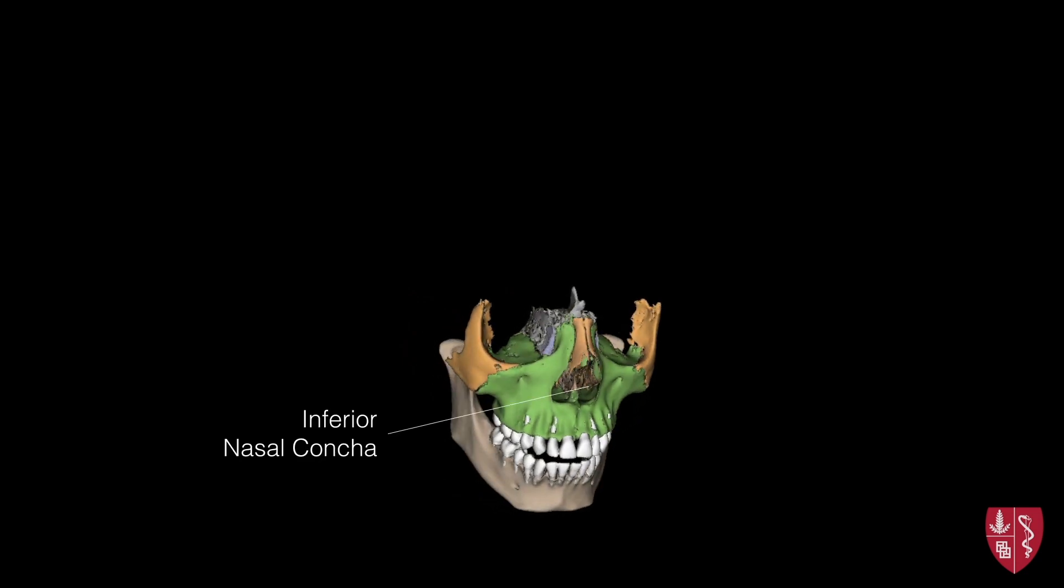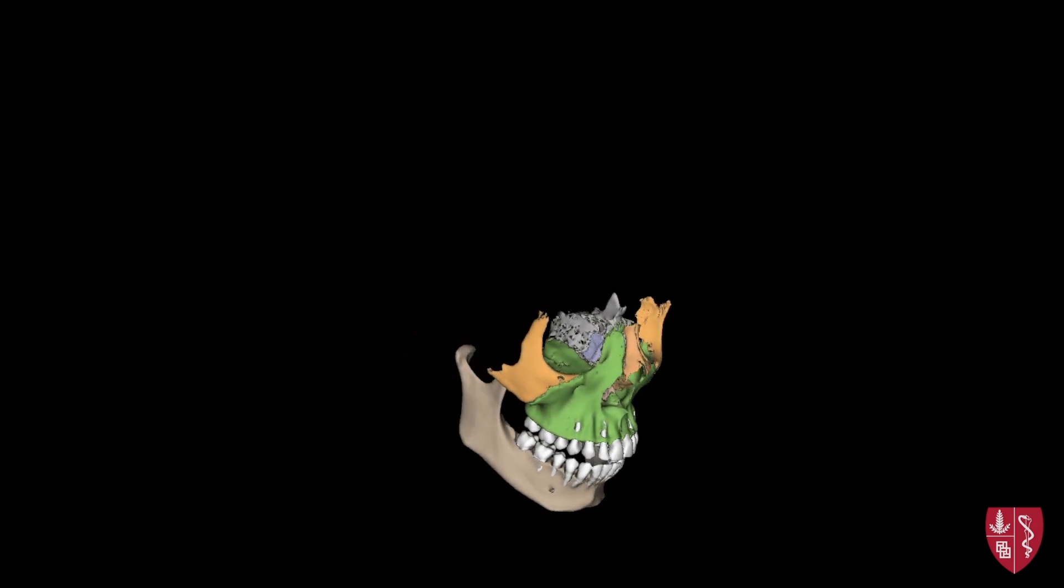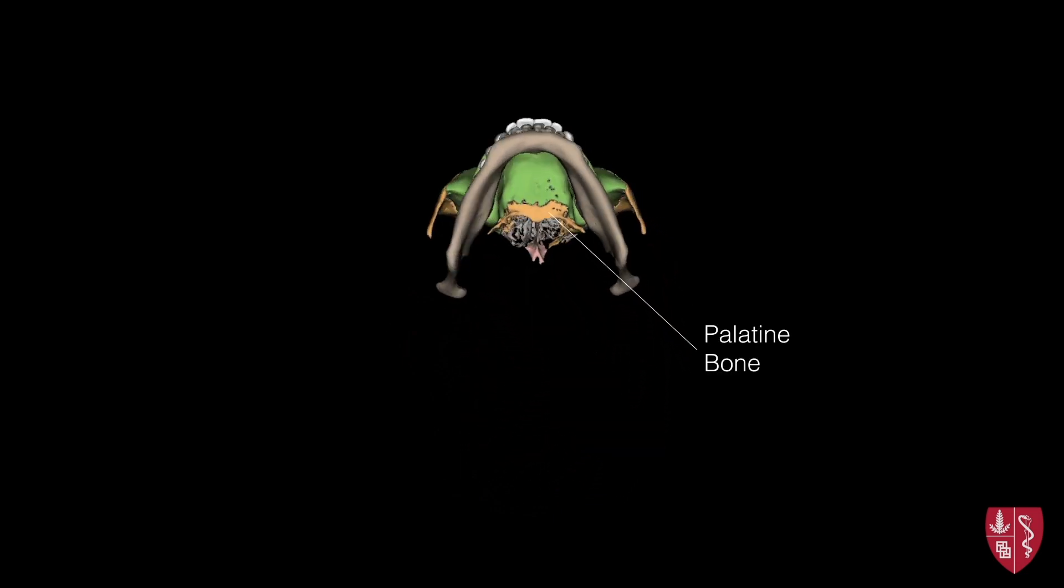The inferior nasal concha and the lateral wall of the nasal cavity. The lacrimal bones, which are on the medial aspect of the orbit. As well as the palatine bones, which form the posterior aspect of the hard palate posterior to the palatine process of the maxilla.